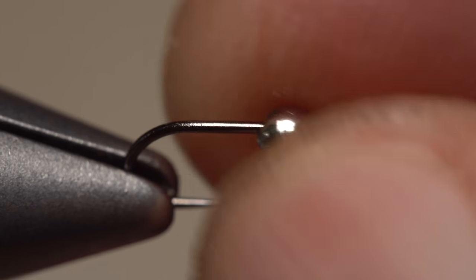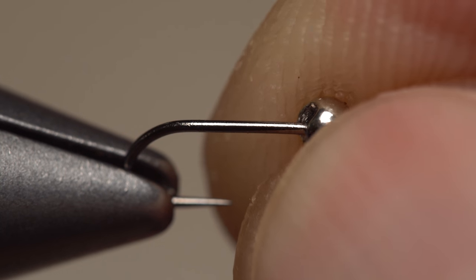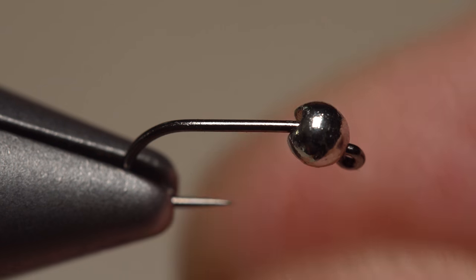The slot on some beads like this one is asymmetrical. I prefer to put the longer slot on the underside of the hook shank with the shorter slot on top.